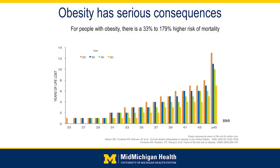Why is obesity so deadly? Consider a patient whose age is 20 with a BMI of 25 — they don't stand to lose any years of life from obesity. But that same 20-year-old with a BMI above 45 could potentially lose 12 to 14 years of their life as a result of obesity. The younger somebody is with a higher BMI, the more years of life they can lose.